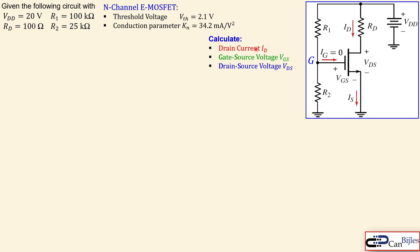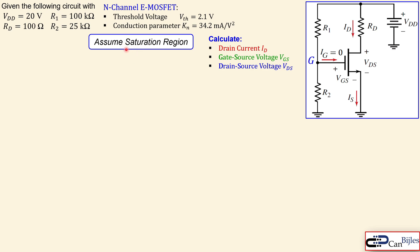What we want to calculate is the drain current, the gate-to-source voltage, and the drain-to-source voltage. The drain current equals the source current because of symmetry, and the gate current is zero. We assume the MOSFET is operating in the saturation region — note that for MOSFETs this is actually called the linear region of operation where current is constant, unlike BJTs where saturation means non-linear operation. Let's call it the linear region to avoid confusion.